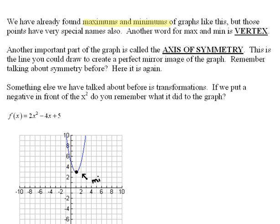So normally we would have said, well, this is a minimum, and that would be the point, what, 1, 3? Well, it's not just a minimum. When we're talking about quadratics, there's a special name for maximums and minimums in quadratics, and that is a vertex. So it's not just a maximum or a minimum, but it's called a vertex.